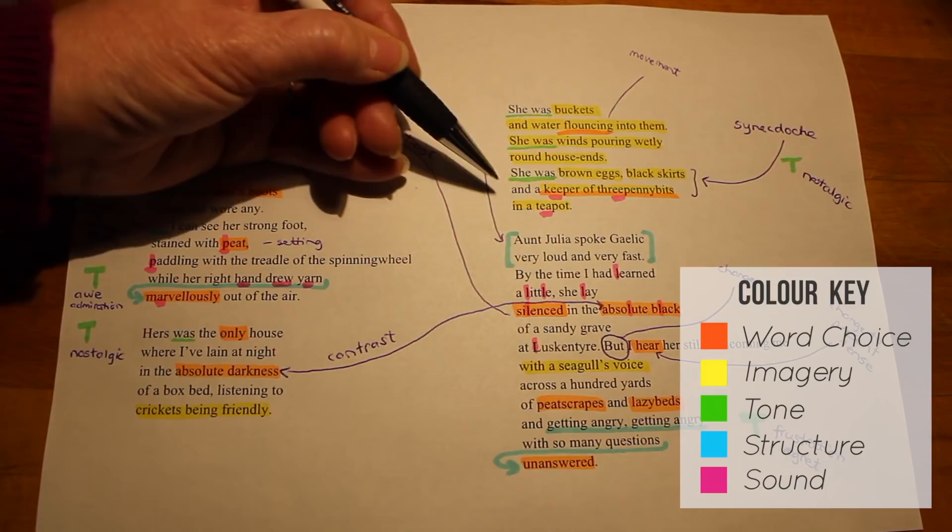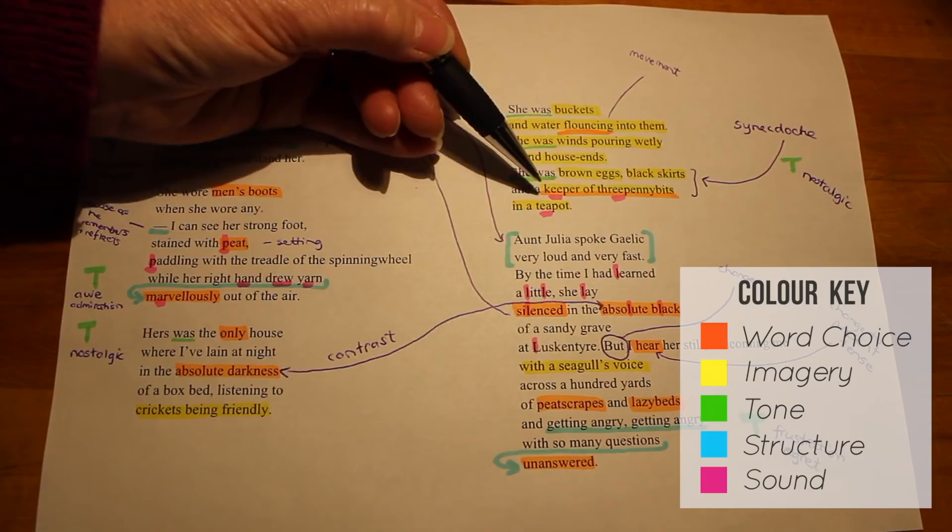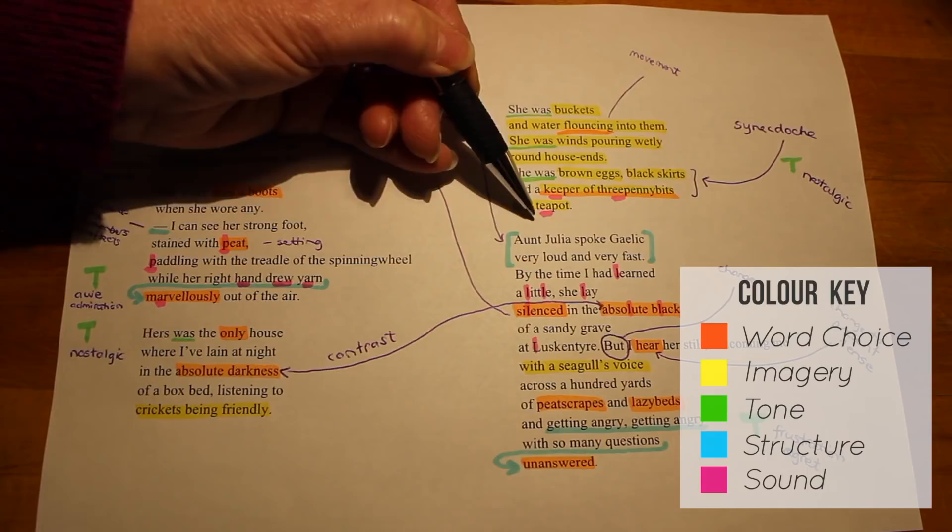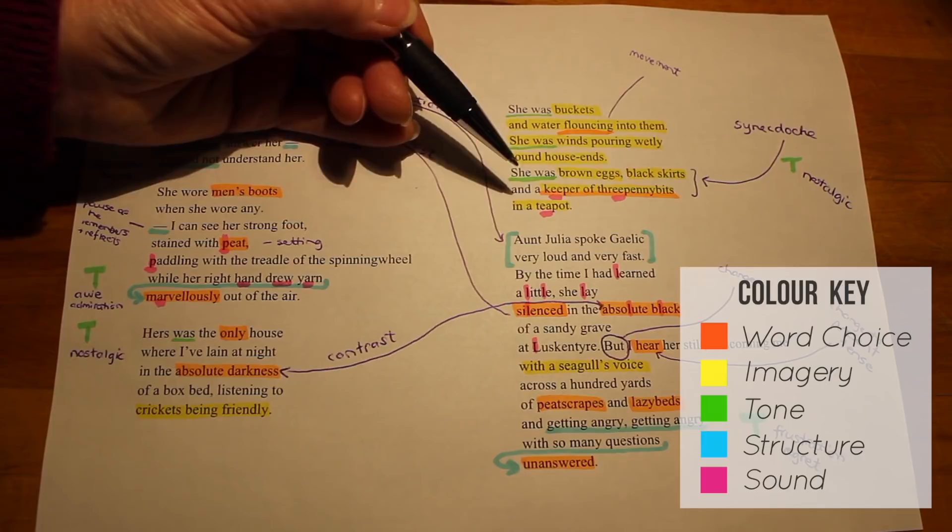And then he uses synecdoche by saying that she was brown eggs, black skirts, and a keeper of threepenny bits in a teapot. Notice the lovely extended E sound here, the assonance, the repeated vowels. And by saying that she is each of these things, he is using those things to represent her. And the tone here is still nostalgic.